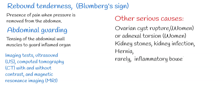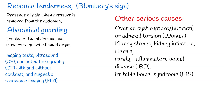Among women, other serious causes of lower right abdominal pain can be ovarian cyst rupture or adnexal torsion. Other causes can include kidney stones, kidney infection, hernia, and rarely inflammatory bowel disease (IBD) or irritable bowel syndrome (IBS).